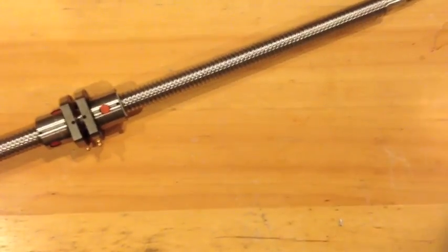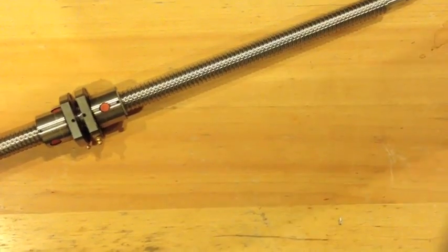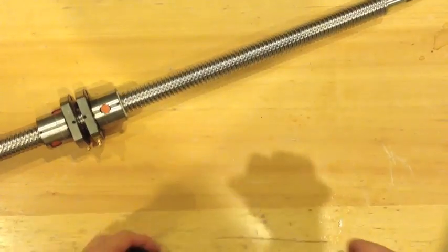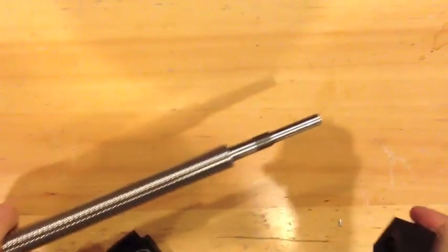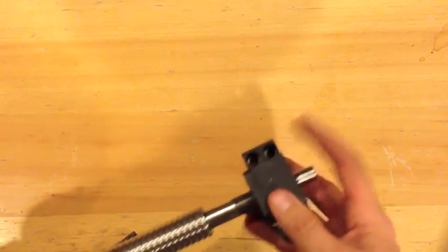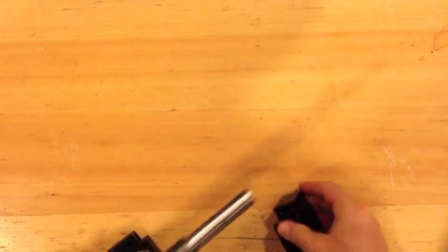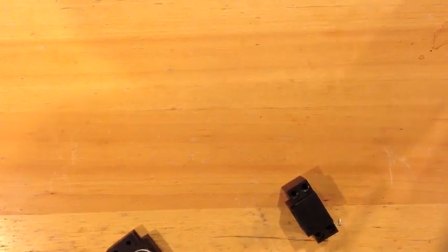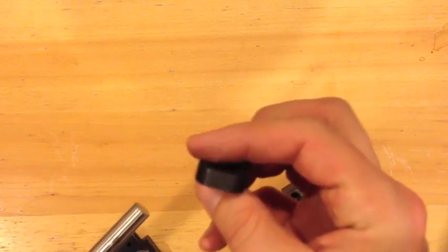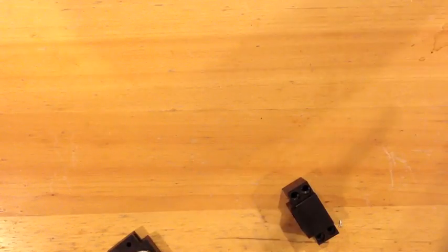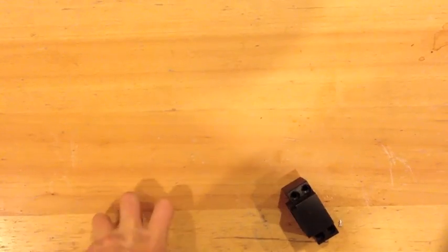It also comes with a fixed block. This is the bearing, it's all fixed. I believe it goes over on this end. It slides down, and then it goes over. And then you see those threads. That's for this little nut that comes with it. It looks like there's even a set screw on there.